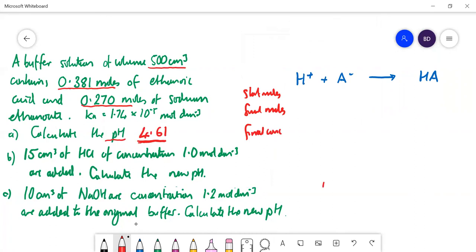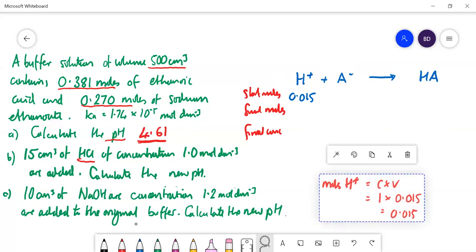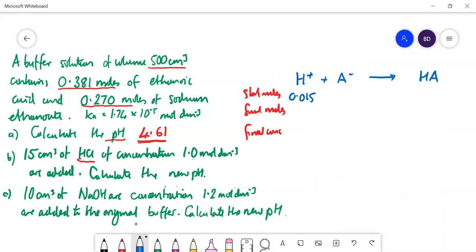Let's do the moles of H+ first. Writing HCl, so one mole of HCl is one mole of H+. So that's going to be concentration times volume. The concentration is 1 multiplied by 0.015. That's the volume in dm cubed. 0.015 is the answer. So put it in there. A- we'll do the moles. Well, we know that from the previous one. It is concentration times volume, 0.27. And the moles of HA, that's 0.381.